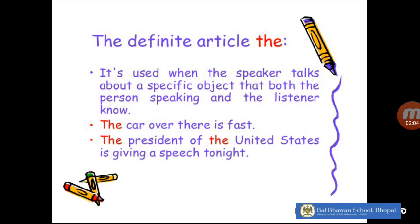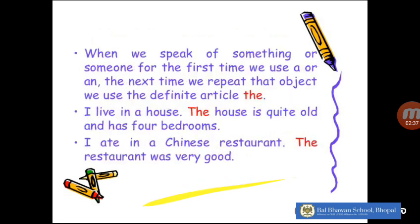Today we will be talking about the definite article 'the.' It is used when the speaker talks about a specific object that both the person speaking and the listener know. For example, if I say 'the car over there is fast,' I'm talking about a particular car. 'The President of the United States is giving a speech tonight' — I'm talking about a particular president of the United States.